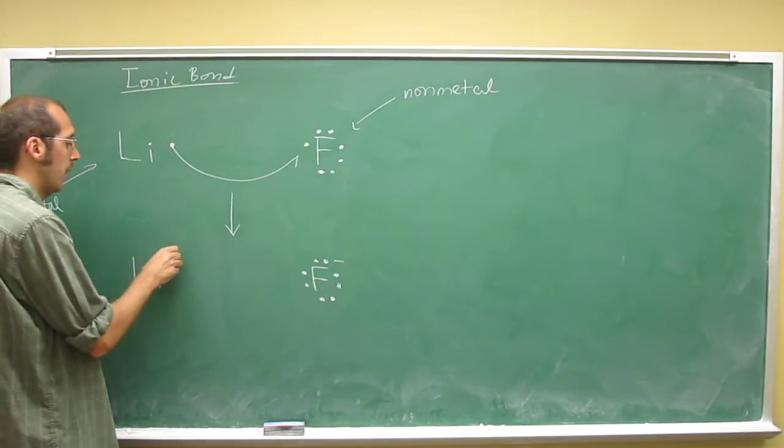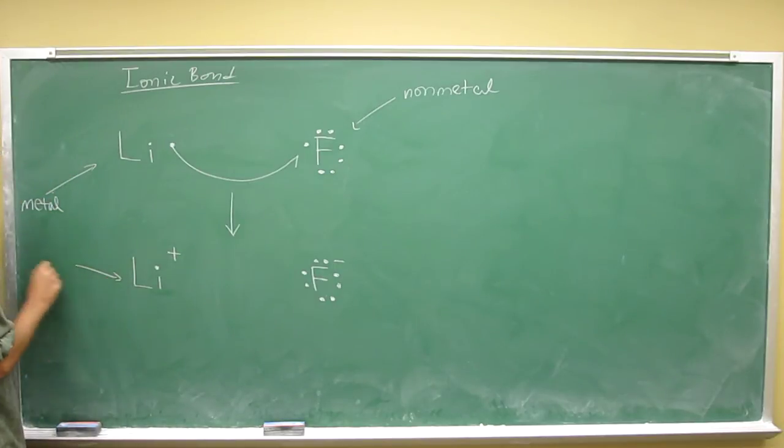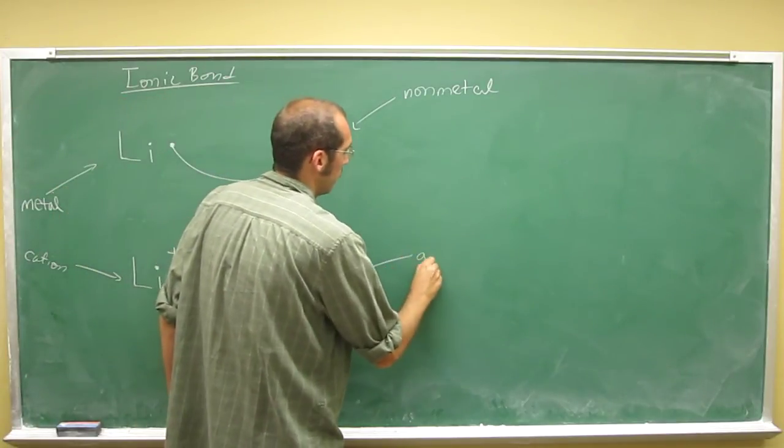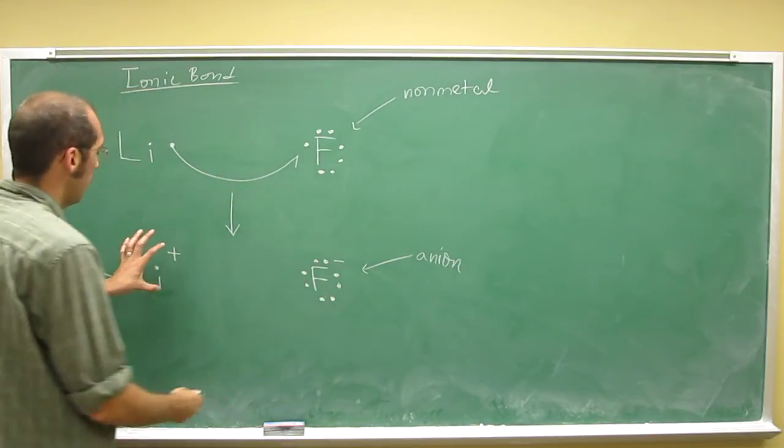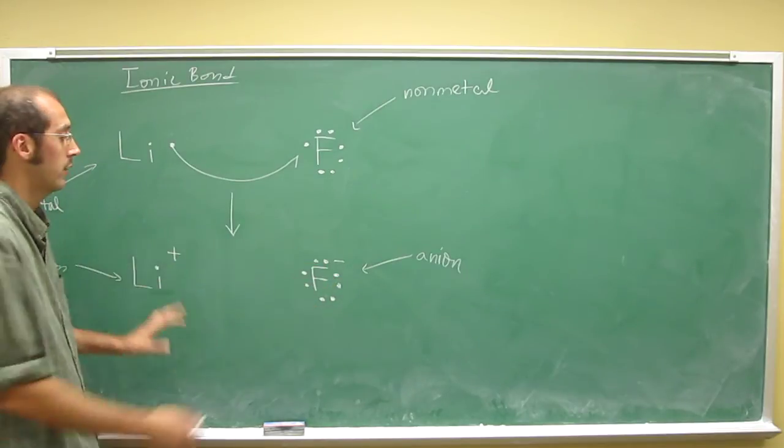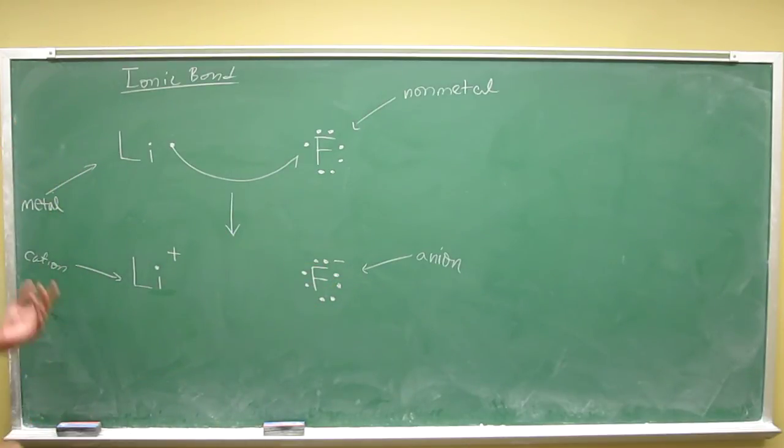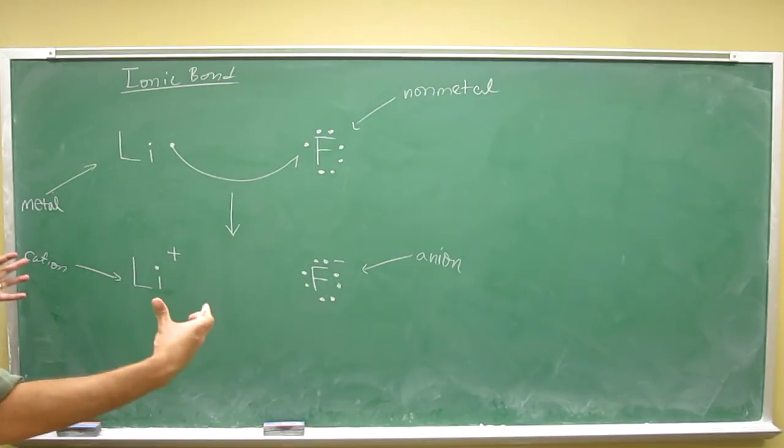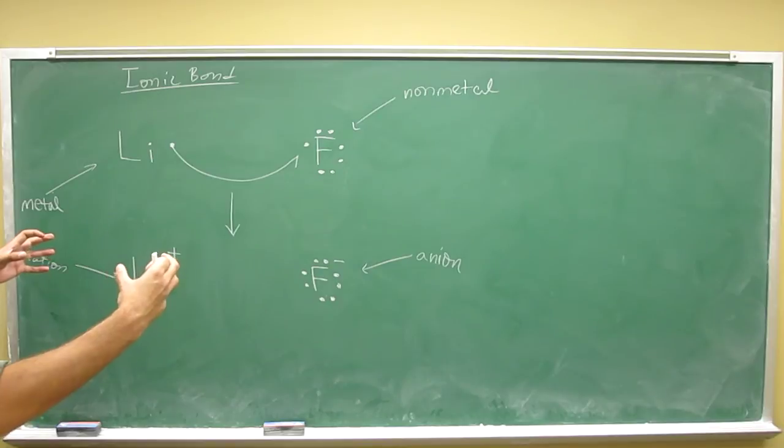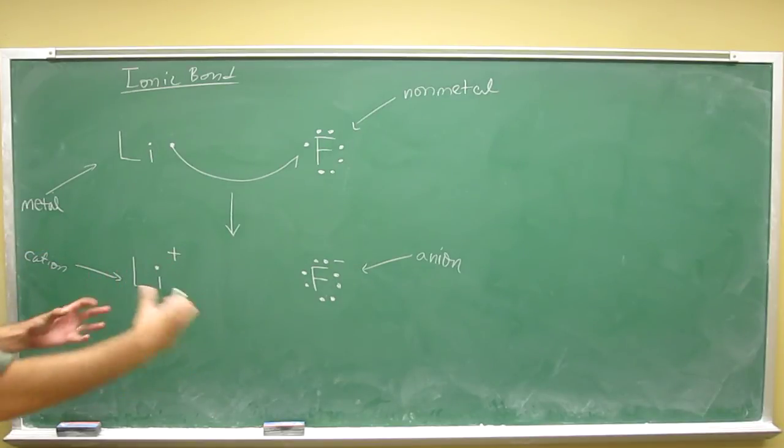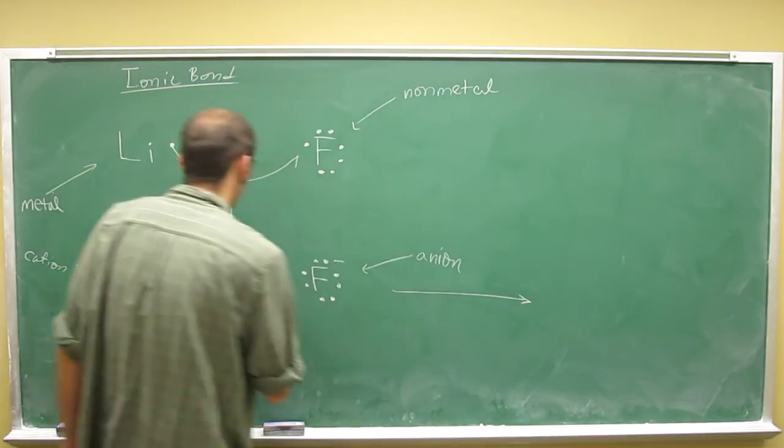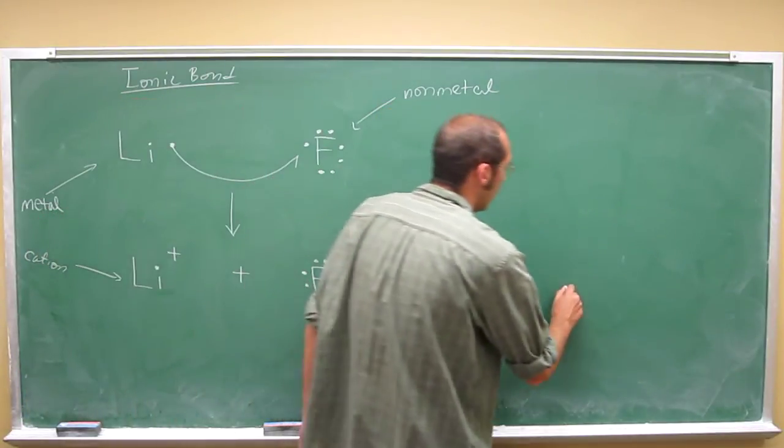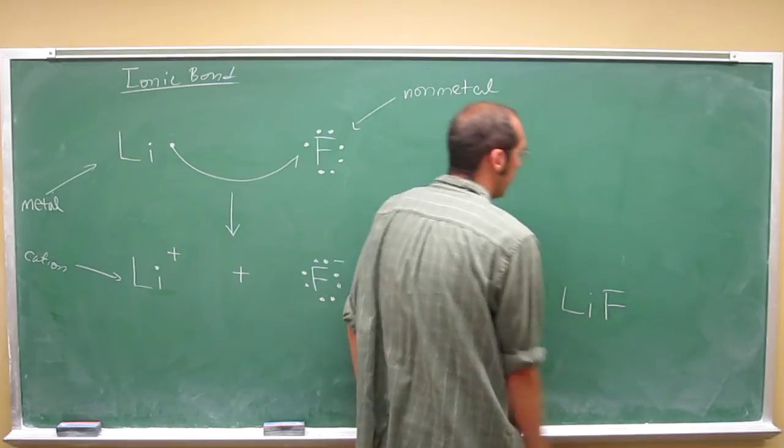So, now what we have is we have a cation and an anion. And when that happens, they're going to, so the positive charge is going to be attracted to the negative charge, and likewise the negative charge will be attracted to the positive charge. And they'll form what we call an ionic bond, this attraction between these two particles, to cancel out that full charge on either one of those particles.